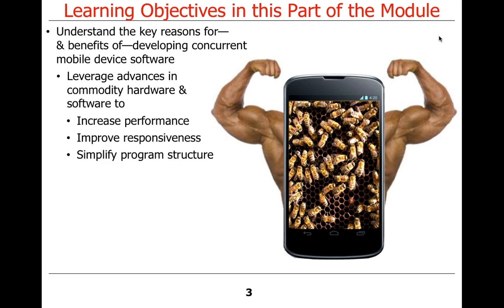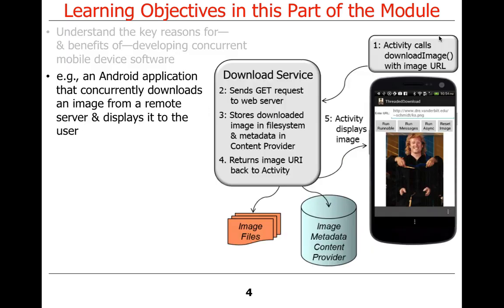One reason is to be able to leverage advances in commodity hardware and software. Things keep getting better, faster, and cheaper over time. So one reason to use concurrency is to take advantage of all that, because otherwise your solutions won't be as fast, responsive, or well-structured. We're going to use our download application as a running example to illustrate some of the key points, with code from a variant of that — you can look at the examples in the GitHub.